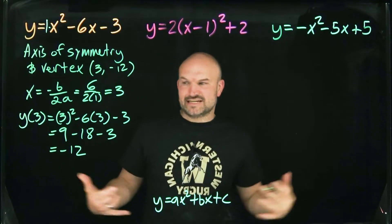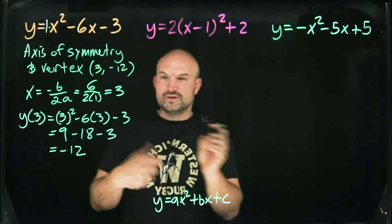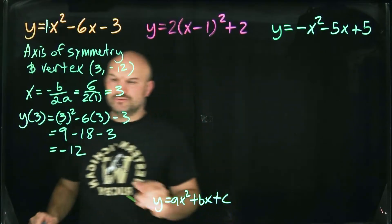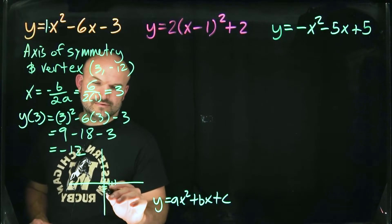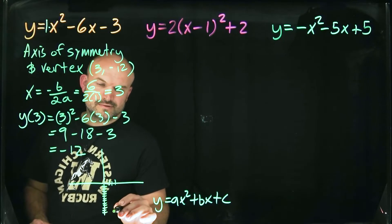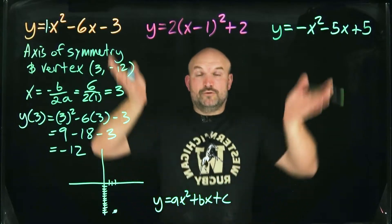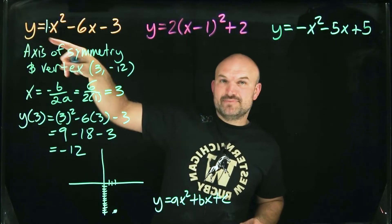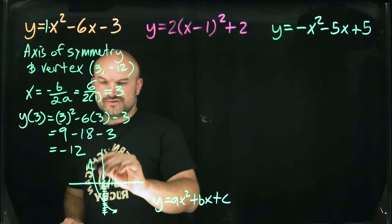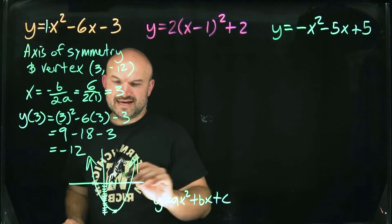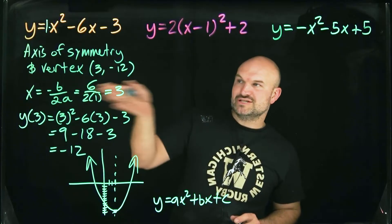Now that we have the vertex at (3, -12), we sketch the graph. Since a is positive, the parabola opens upward. We draw the line of symmetry at x equals three, and the graph opens up from the vertex.